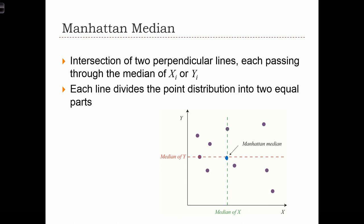And what we'll find is that each line divides the point distribution into two equal parts. So the x median will divide the point set such that there's half the points to the right and half the points to the left. And the y median divides the data set such that there's half the points above and half the points below.